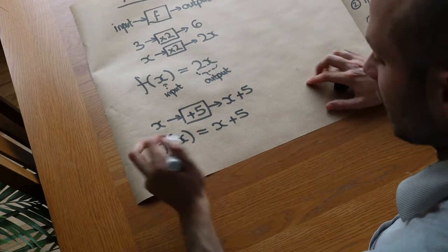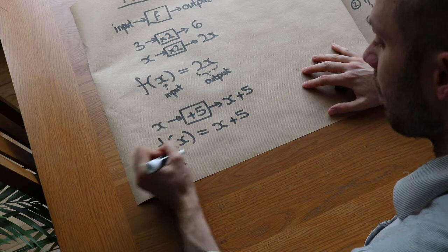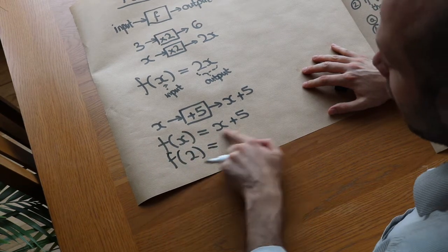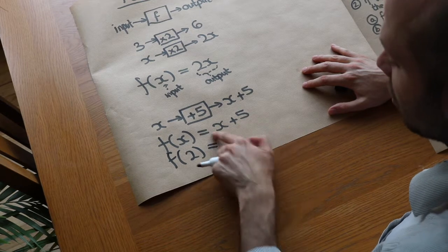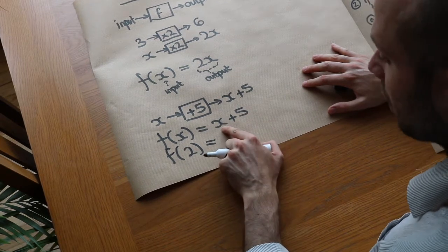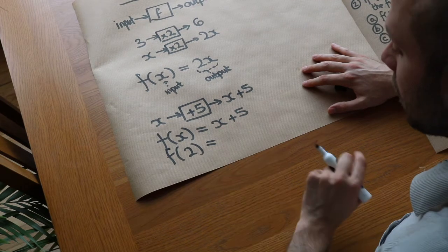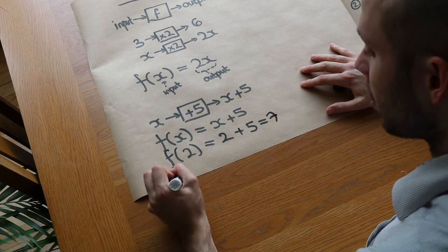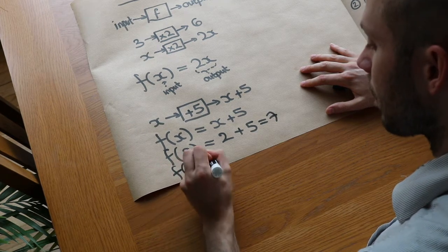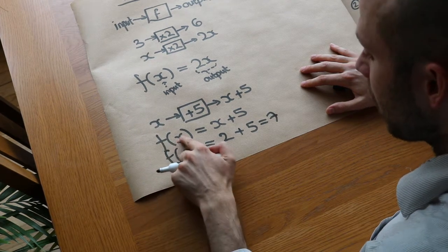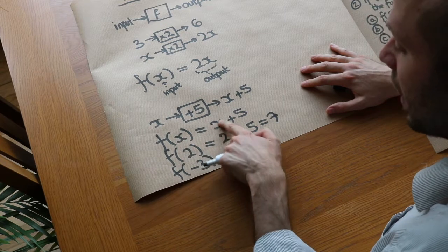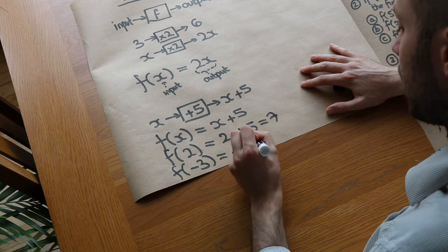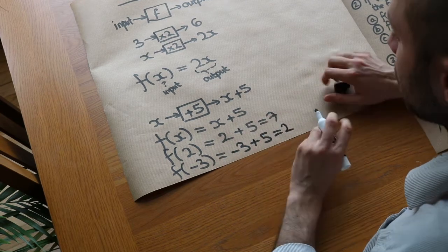We can input values into here. So we could do f of two — now x has been replaced by two, so every instance of x in the output expression we substitute for two. So that would be two plus five, which is obviously seven. And we could do f of minus three — x is minus three, so it's going to be minus three plus five. We substitute x for minus three, so it's minus three plus five, which would be two.